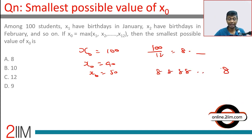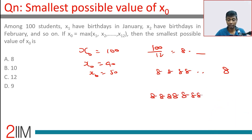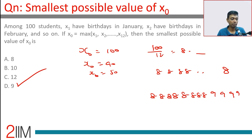Twelve 8s takes us to 96. You could have eight 8s which takes us to 64, then adding 9, 9, 9 brings us to 100. So the smallest possible value of x0 is 9. Everything cannot be 8, but with a bunch of 8s and a few 9s the total of 100 can be achieved, making x0 equal to 9.